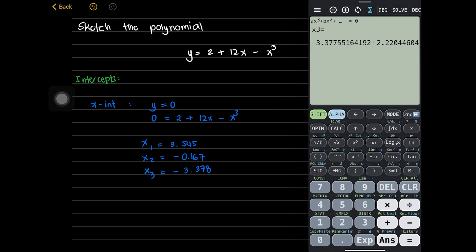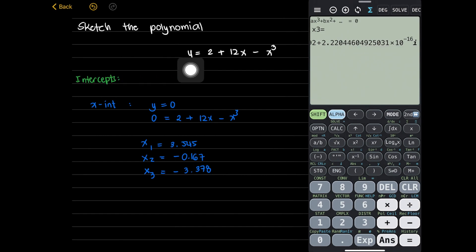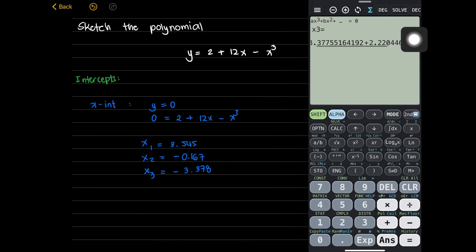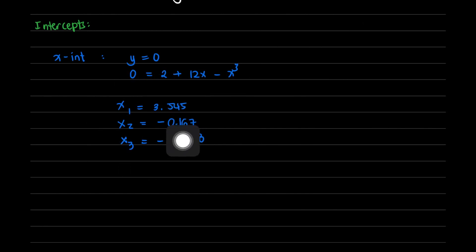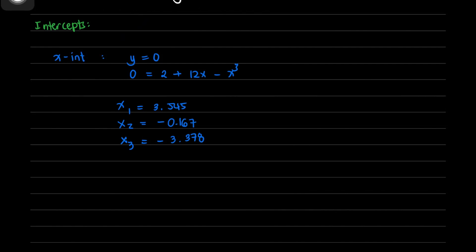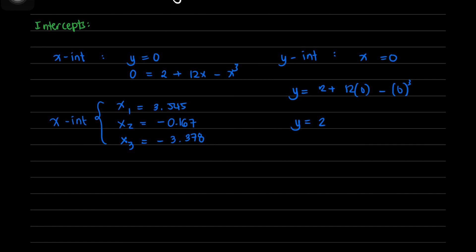These are the roots of x. The calculator shows an imaginary value, but the imaginary component is raised to negative 16, so it is negligible. These are the x-intercepts of the given function. Now, solving for the y-intercept, we set x equal to 0. Then y equals 2 plus 12(0) minus 0 cubed, which equals 2. So the y-intercept is 2.